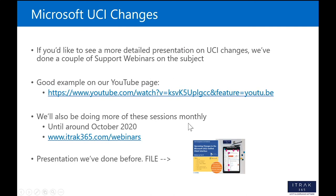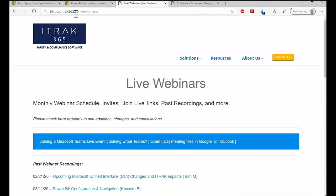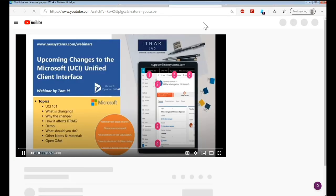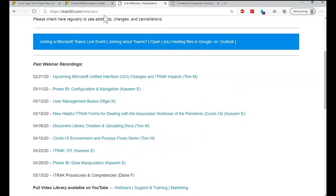On the UCI, support has done a few of these sessions — about three — and we'll probably do another one in June and July, kind of one a month. Most of these UCI changes are targeted for October 2020 as when everybody's going to get rolled over. I've embedded a link to a YouTube video and an actual presentation I've done in the past. On our webinars page at neosystems.com or itrack365.com/webinars, you can find a 25-minute video on things specific to UCI.